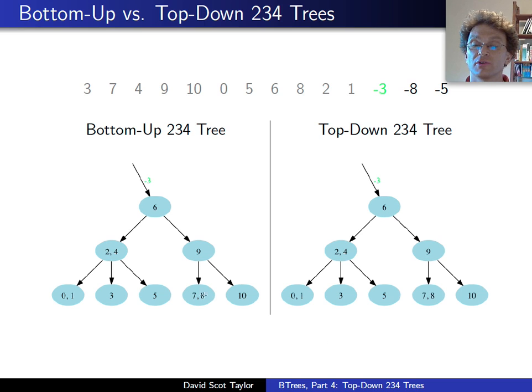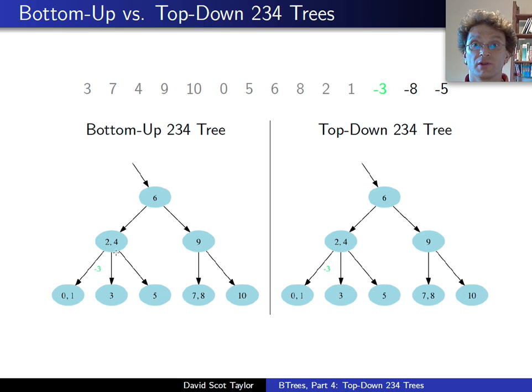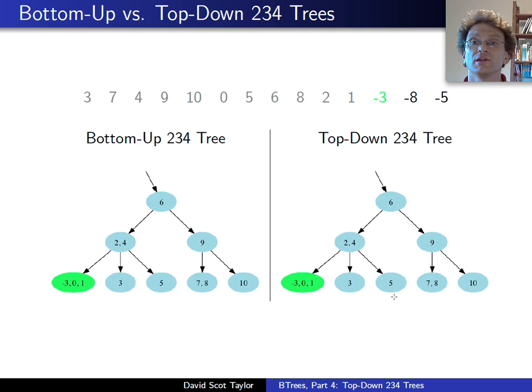Now I insert a -3. In both cases, -3 is less than 6, it moves down a level. In both cases, -3 is less than 2, it goes down another level. And in both cases, it just gets put into the leaf node. So they both happen exactly the same.